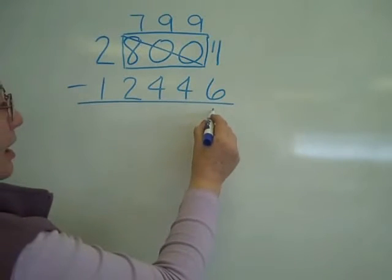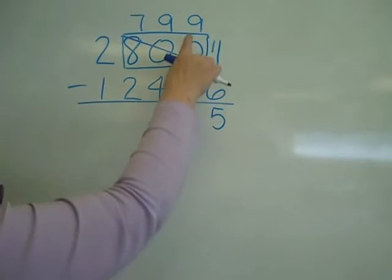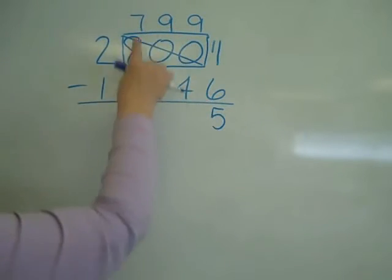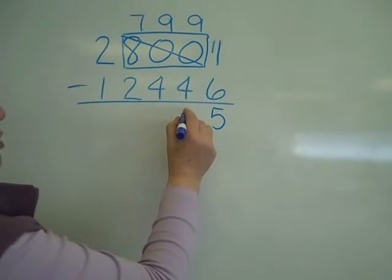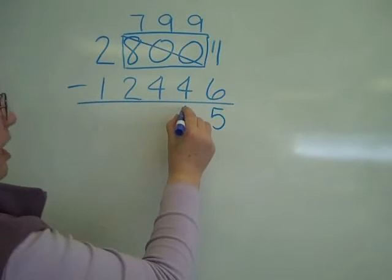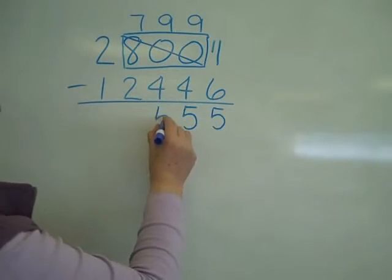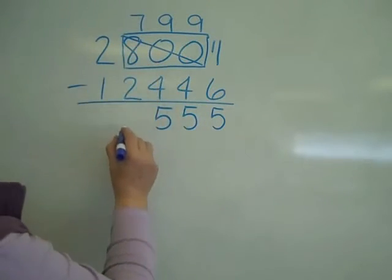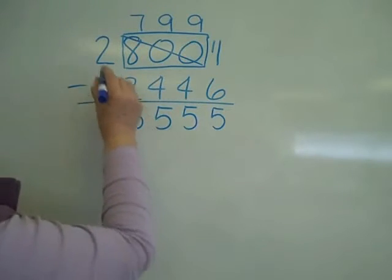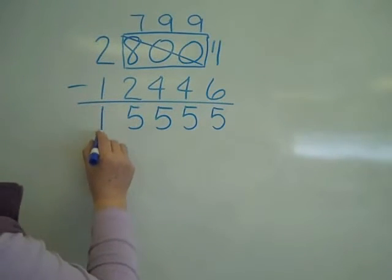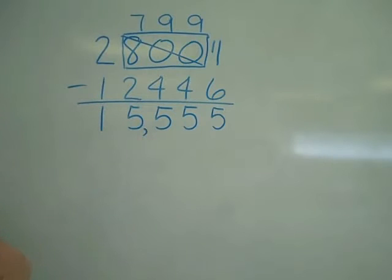11 minus 6 is 5. Notice right here, all of my borrowing is done. So 9 minus 4 is 5, 9 minus 4 is 5, 7 minus 2 is 5, and 2 minus 1 is 1. 15,555.